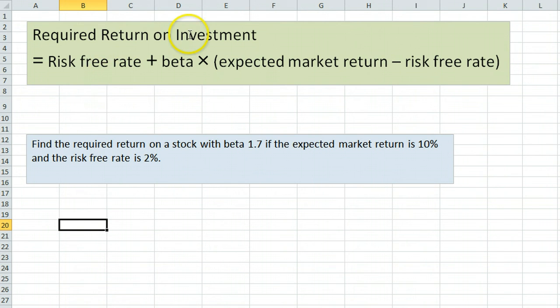The required return on investment is equal to the risk-free rate plus the beta of the investment multiplied by the expected market return minus the risk-free rate. We have an example here.